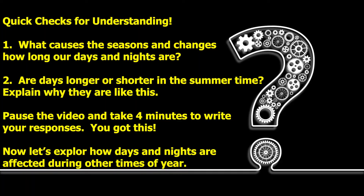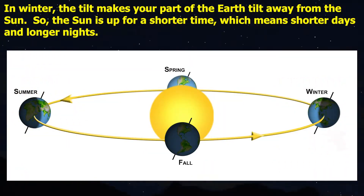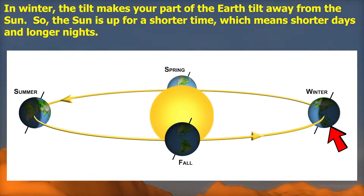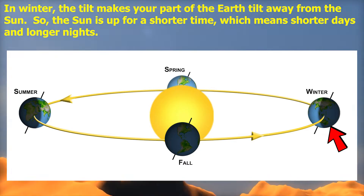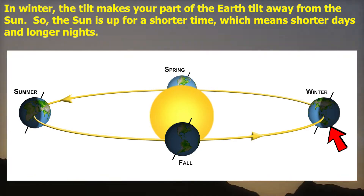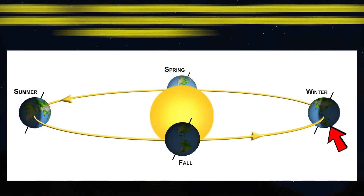Now let's explore how days and nights are affected during other times of the year. In winter, the tilt makes your part of the earth tilt away from the sun. So the sun is up for a shorter time, which means shorter days and longer nights.